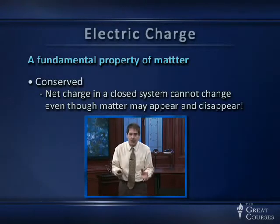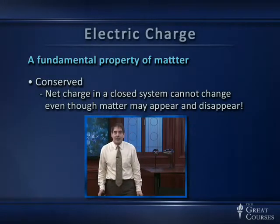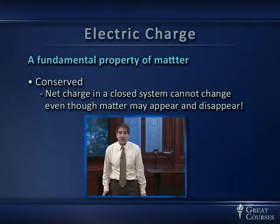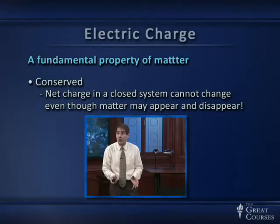Electric charge is a conserved quantity. If you have a closed region, the total amount of electric charge in that region can never change. It's even more conserved than mass — the net charge in a closed region won't change, whereas the amount of mass can change as particles are created or annihilated. A positive and negative charge can appear together — that's still zero net charge. A positive and negatively charged particle can annihilate — the matter goes away, but there was no net charge to begin with.